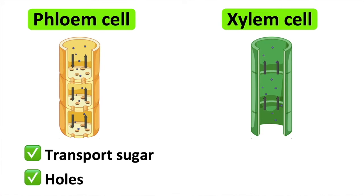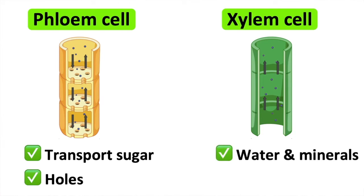These are plant cells that build the transport system for water and mineral salts. These cells are strengthened with a hard substance called lignin. This helps the cell withstand changes in the pressure of water.